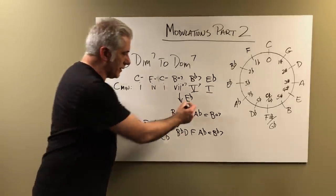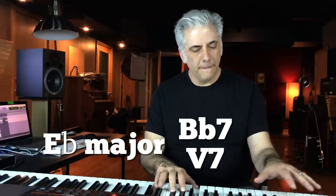So this is a very simple type of modulation. It's a very simple modulation — I'm taking this B diminished seventh chord, lowering the root down, and it becomes a B flat dominant seventh chord. So what was once the seven chord in C minor becomes the transition chord to B flat seven to E flat major. Very simple modulation, but really effective.